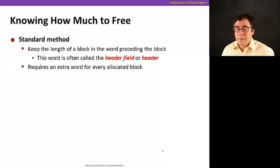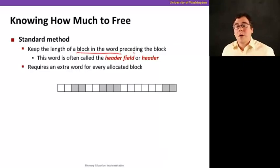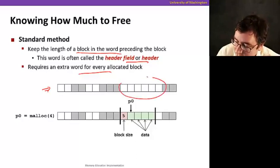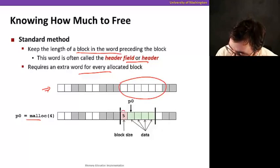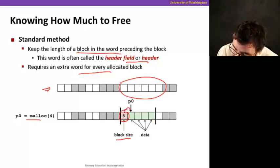Let's solve the first question first. So we need to know how much to free. The standard method is just to keep the length of a block in a word preceding the block. We're going to have a header field. So that's going to require some extra words, it's a little bit of overhead, but it will be worth it. So for example, here's our heap, and we have this free block here. When I call malloc, I decide to use this block. And now what we're going to do, we're going to use one of the words here to store the block size. So now I know that there's a word preceding the pointer where the data is. I know that the immediate word always contains the block size, so I know how much to free.